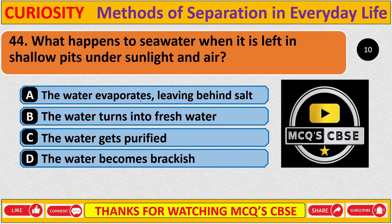Question: What happens to seawater when it is left in shallow pits under sunlight and air? Correct answer is A: The water evaporates, leaving behind salt.